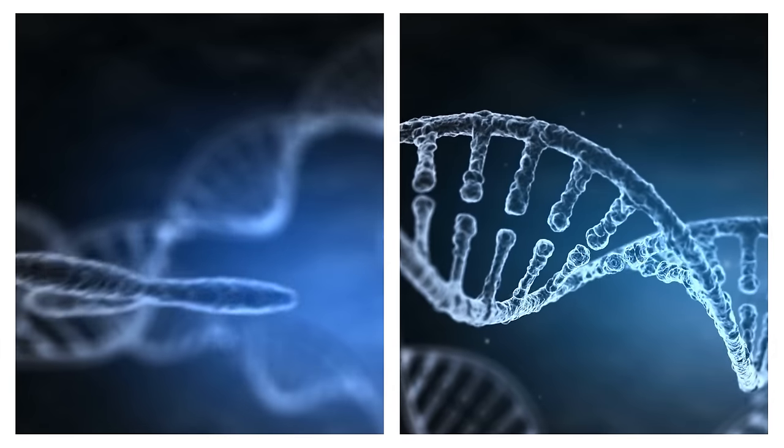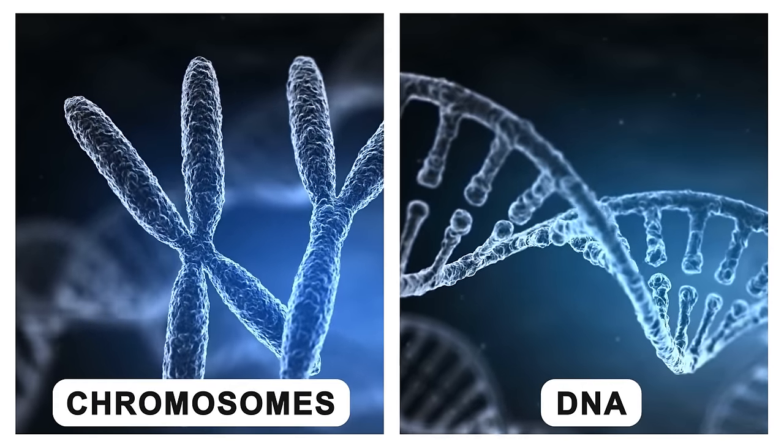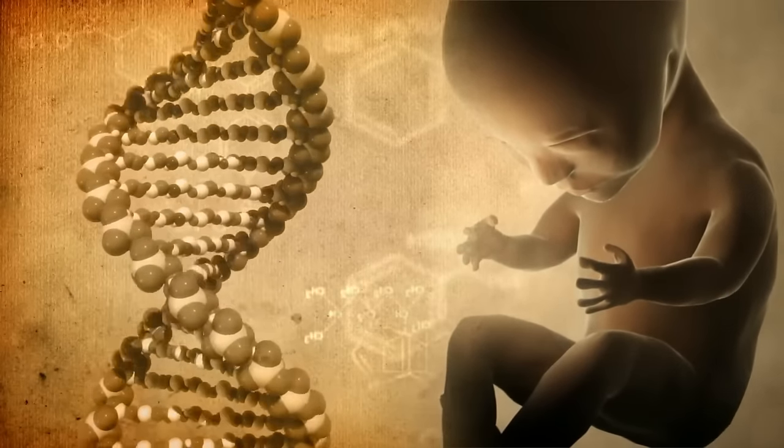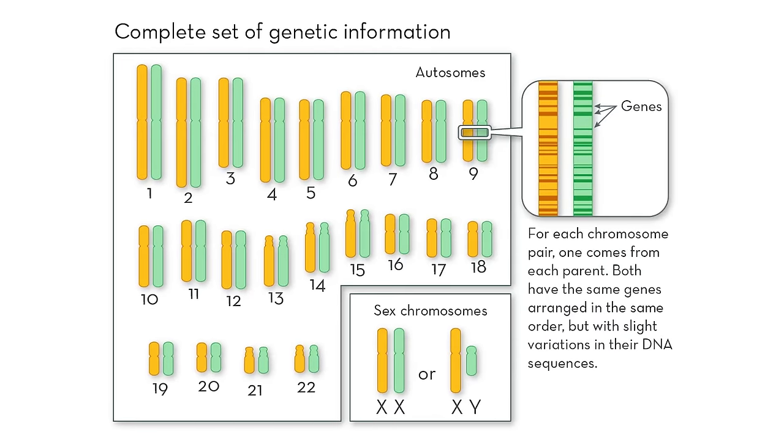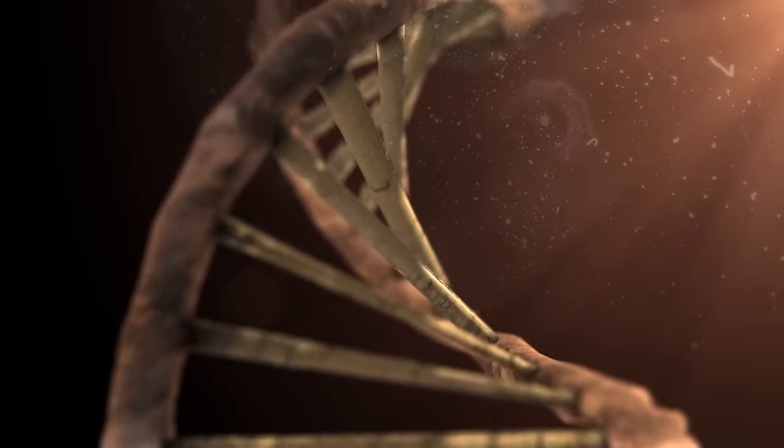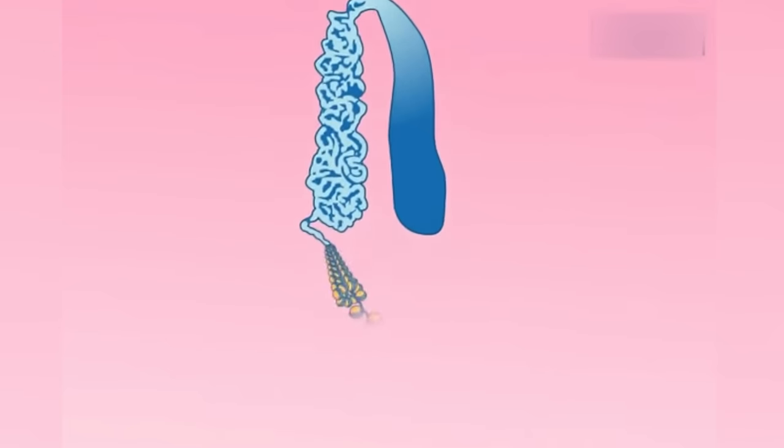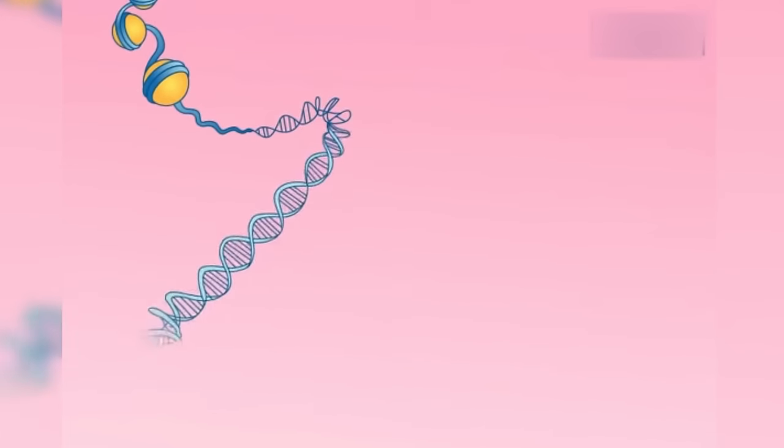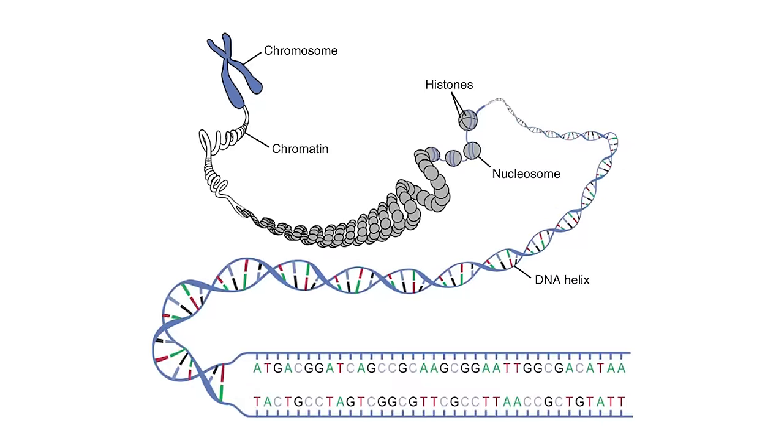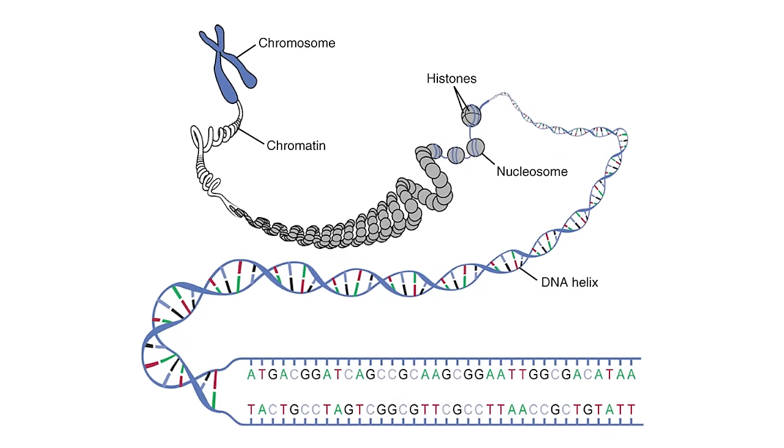Before we go on, it's important to differentiate between chromosomes and DNA. Although used interchangeably sometimes, the two actually have a difference. While chromosomes carry the genetic information of an organism, DNA is the molecule that contains the genetic instructions essential for development. Think of a chromosome as a long, organized structure composed of DNA and proteins. Each chromosome contains a single continuous DNA molecule that carries many genes. In other words, DNA is the substance within chromosomes, and chromosomes are the organized form in which DNA is packaged.